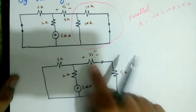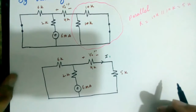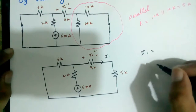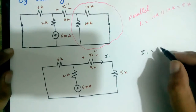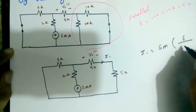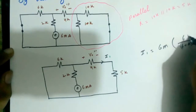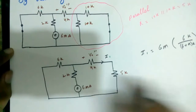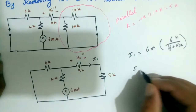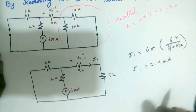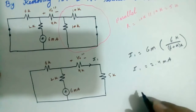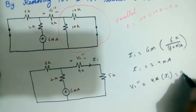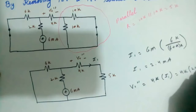We want to find V0 double dash. We first need to find I1 using the current divider rule: I1 equals 6 milliampere into 6 over 6 plus 9K, where 9 is the resultant value of 5 plus 4. So I1 is equal to 2.4 milliampere.